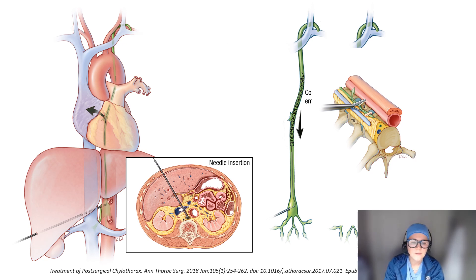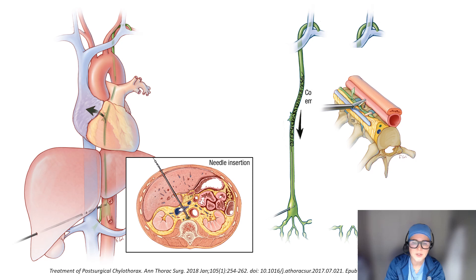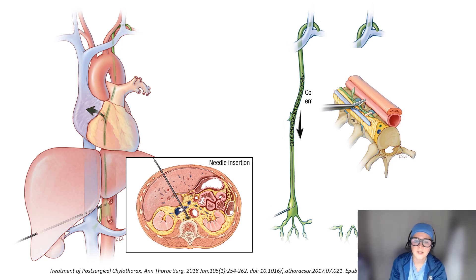Thoracic duct lymphangiography with thoracic duct embolization is a novel, less invasive, and potentially equally efficacious treatment method. Several studies have reported the efficacy of both surgical thoracic duct ligation and thoracic duct embolization separately. However, in a particular study published in the Annals of Thoracic Surgery, we attempted to compare treatment modalities and determine what percentage of patients sent for lymphangiography went on to undergo thoracic duct embolization.